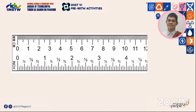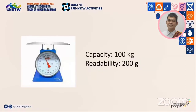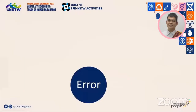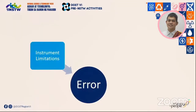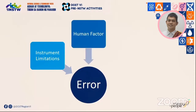Consider the case of a top-loading spring scale which has a capacity of 100 kilograms and a readability of 200 grams. The indications of this device will not be able to provide you direct information when the pointer falls in between two minor markings. At some point, you will have to make some sort of approximation or estimate. This is one possible source of error. There could be a multitude of sources of errors in a measurement. The most common ones are instrument limitations, which are due to the way these devices are designed. To err is human, as they say.